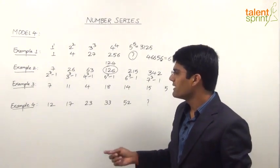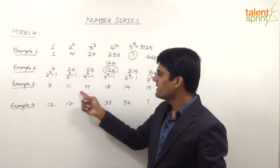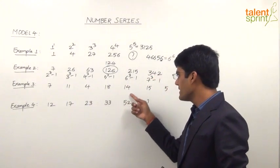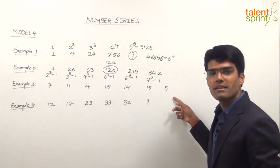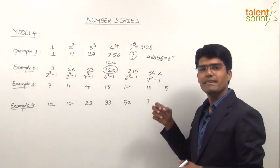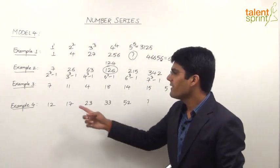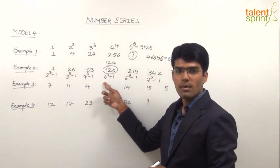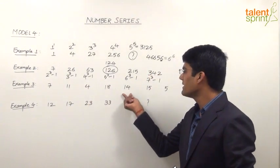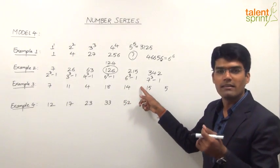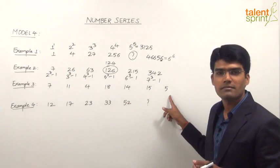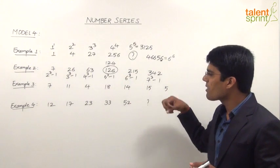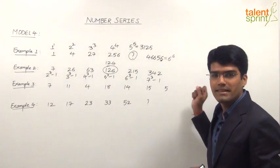If you look at the numbers here, 7 increases to 11, then decreases then increases, decreases, increases and decreases. But this increase and decrease is not in a proper flow. 7 is increasing up to 11 but suddenly it decreases. Then it increases by a huge value that is up to 18, then decreases lightly. Again increases only by 1 and suddenly decreases up to 5. So there is not a proper flow in that increment and decrement.